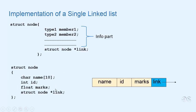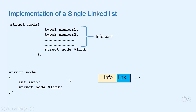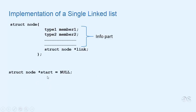Here is another example where the info part contains three numbers, and another where the info part is a structure. In our examples we will take the structure where the info part contains only an integer value. To implement a linked list, the first thing we have to do is declare a pointer 'start' and initialize it to null, which indicates that the list is initially empty.